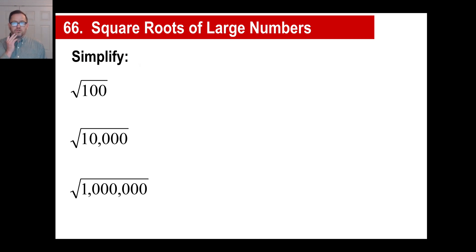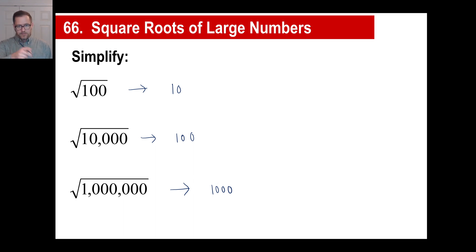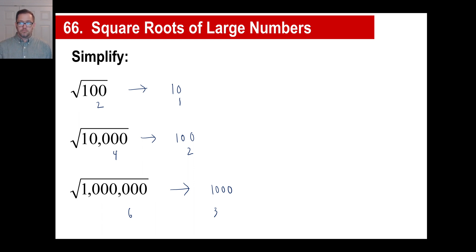Now we're going to do something interesting — write these down and look at the pattern that develops. The square root of 100 is 10. The square root of 10,000 is 100. The square root of 1,000,000 is 1,000. Look at the pattern with the zeros: the square root with two zeros gives you one zero; four zeros gives you two zeros; six zeros gives you three zeros. In other words, if you have an even number of zeros under a square root, you can basically divide it in two.